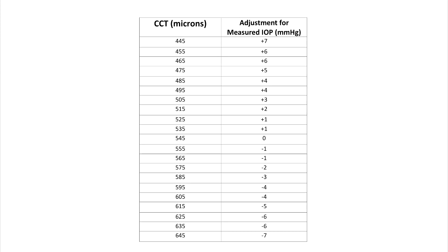Corneal thickness allows us to interpret IOP measurements because corneal thickness can affect the measurement of IOP. Thinner corneas, being less than 545 microns, lead to an underestimation of the IOP measurement, and thicker corneas overestimate the IOP readings. This table shows how to adjust IOP readings according to the corneal thickness measurement. For example, if a patient had an IOP reading of 21 mmHg but a corneal thickness of 615 microns, you would subtract 5 mmHg from their reading, giving a corrected value of 16 mmHg. This highlights the significance of pachymetry, as an IOP reading may indicate that a patient is at high risk of an eye disease such as glaucoma, but when adjusted for corneal thickness, the previous IOP reading may be inaccurate.